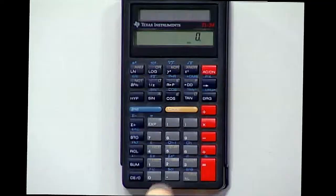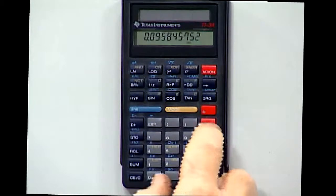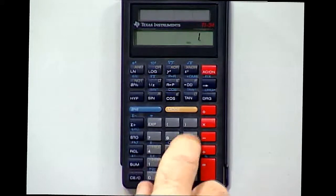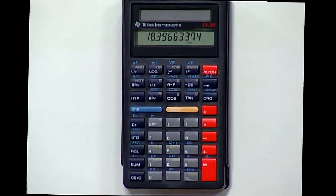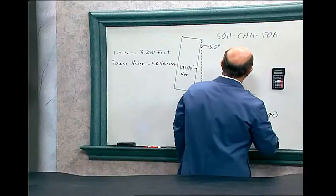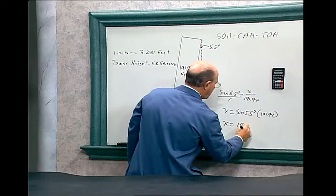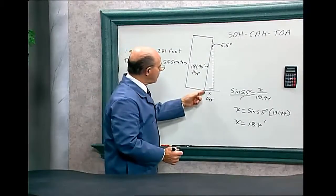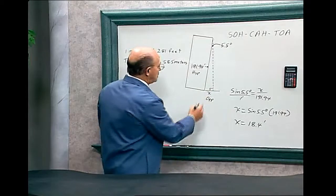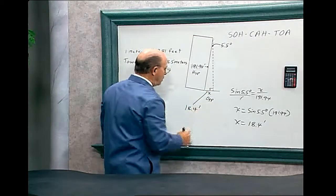Let's just plug in the numbers into the calculator. Clear the calculator. Sine of 5.5 degrees sine, multiply by 191.94 equals 18.396 or 18.40. So x equals 18.4 feet. So the distance now for the tower tilting, this is 18.4 feet.